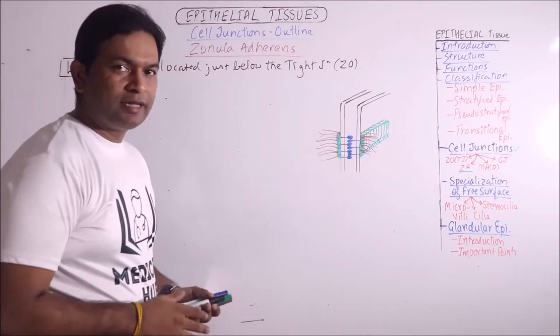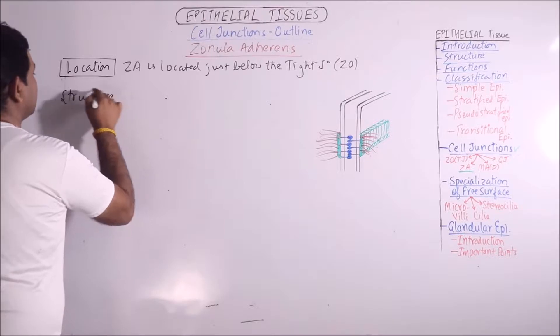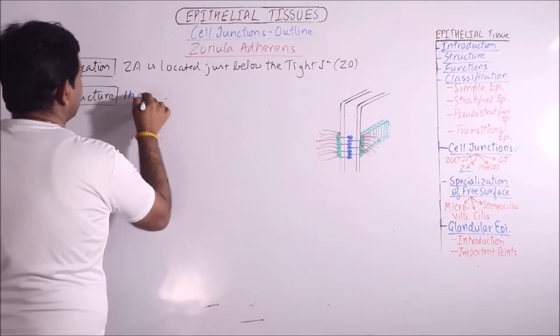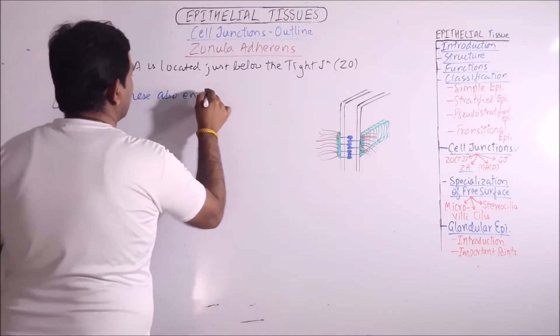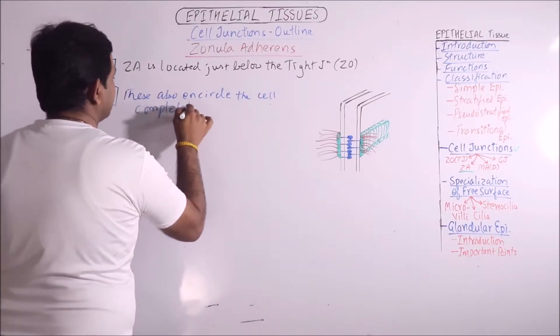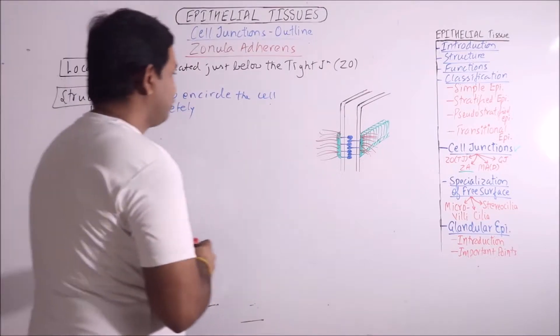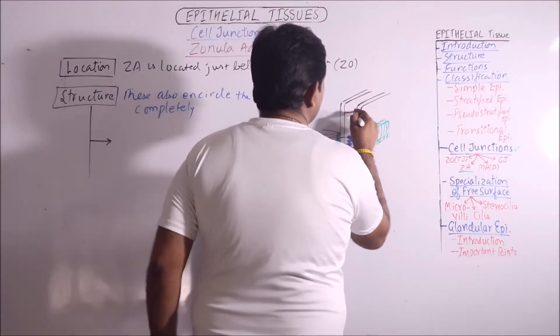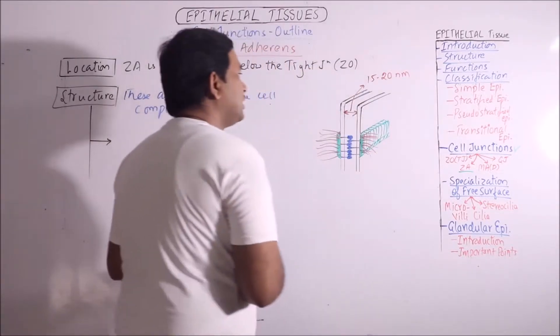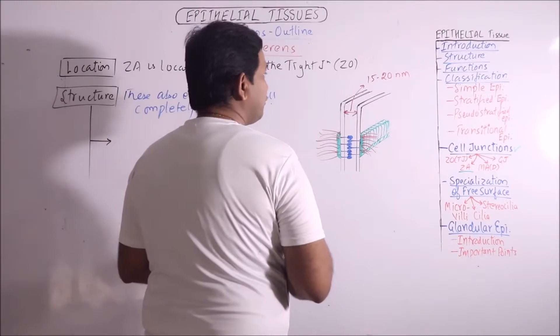Then structure. Important about this junction is that these also encircle the cell completely, just like tight junctions and the structure is having few important peculiarities. The intercellular space is having a gap of 15-20 nanometers.